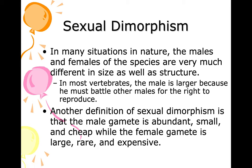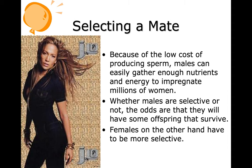In many situations in nature, males and females are very different in size and structure. In most vertebrates, the male is larger because he must battle other males for the right to reproduce. Another definition of sexual dimorphism: the male gamete is abundant, small, and cheap, while the female gamete is large, rare, and expensive. Thus females are worth more — a male could impregnate any number of females, but each female is worth one child.